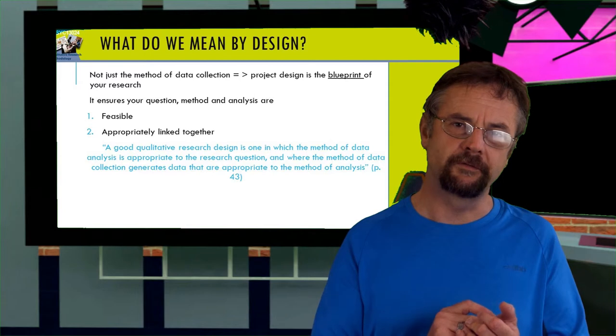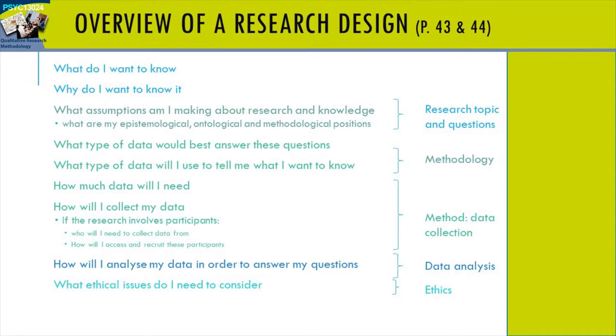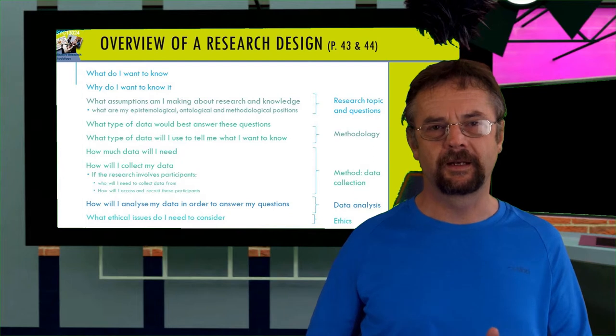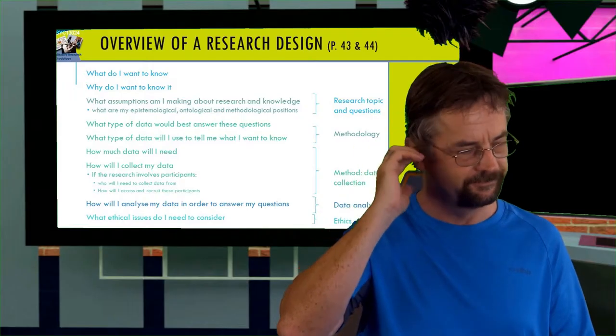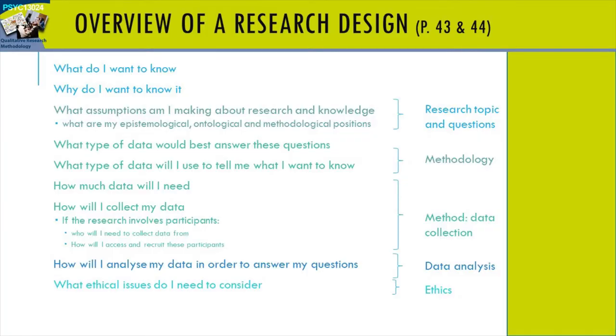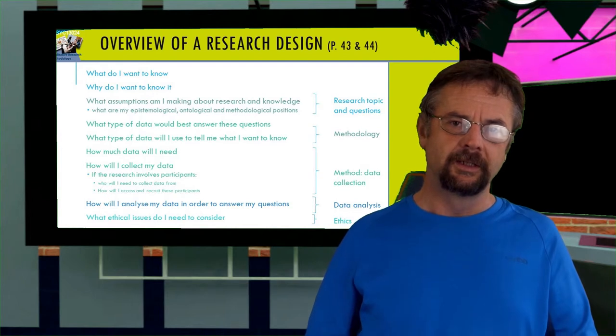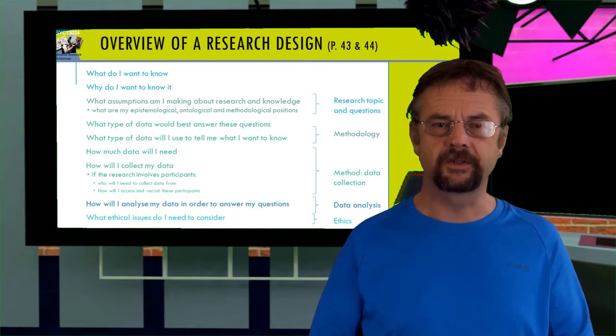Now, on pages 43 and 44 of our prescribed text, we get an overview of what a research design is. Here, there are five main elements. So we've got the research topic element, one research topic and questions. This is where we decide what we want to know and why we want to know it. There has to be a point to what we're doing. Remember, we're usually going to be involving people in our project. So it mustn't be a waste of time. You are wasting my time. You can't be wasting people's time. So it has to be a point to us doing our research.